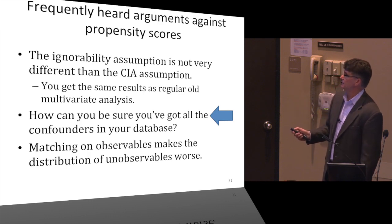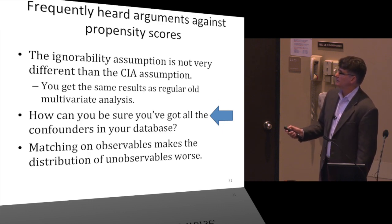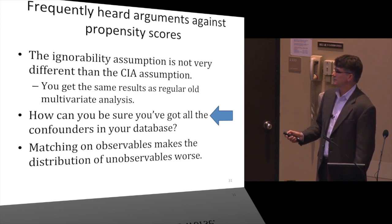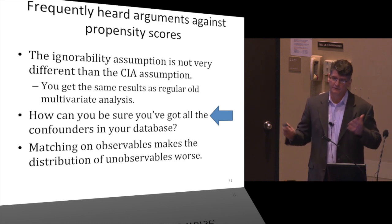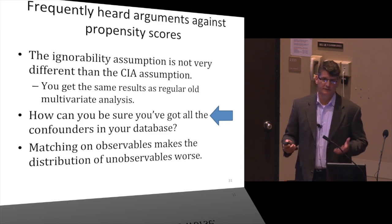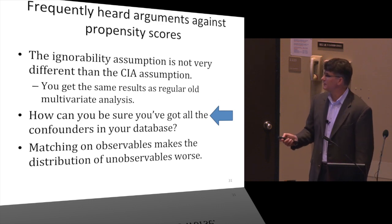And the methods don't have to agree — Martins showed in a simulation that propensity scores got the right answer more often than traditional multivariate statistics, particularly for large odds ratios in smaller datasets. So it's not always the case that you come up with the same answer.